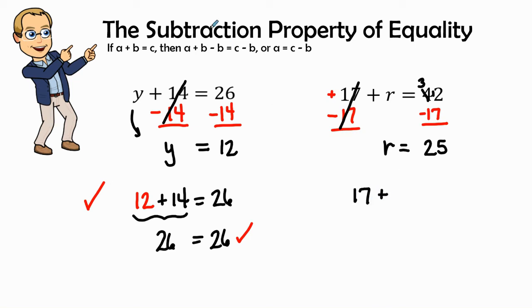We have 17 plus that variable replaced by r would be 25, is equal to 42. Well, 10 and 20 is 30, 7 plus 5 is 12. Therefore, 42 is equal to 42, and we know that our answer is correct.